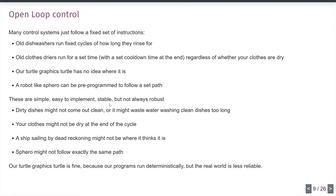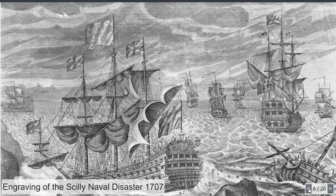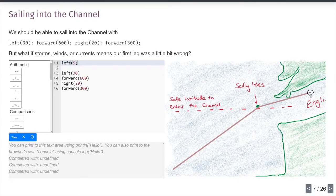An old clothes dryer might run for half an hour — the heater turns on, an internal mechanism turns the heater off at 10 minutes remaining, and it stops regardless of whether your clothes are dry. Our turtle graphics was doing something even slightly worse than dead reckoning — our turtle had no idea where it was to start with, it just followed instructions: turn left 30 degrees, forward 600 pixels, right 20 degrees, forward 300. It did that even if our position was wrong — that's how we struck the Scilly Isles.